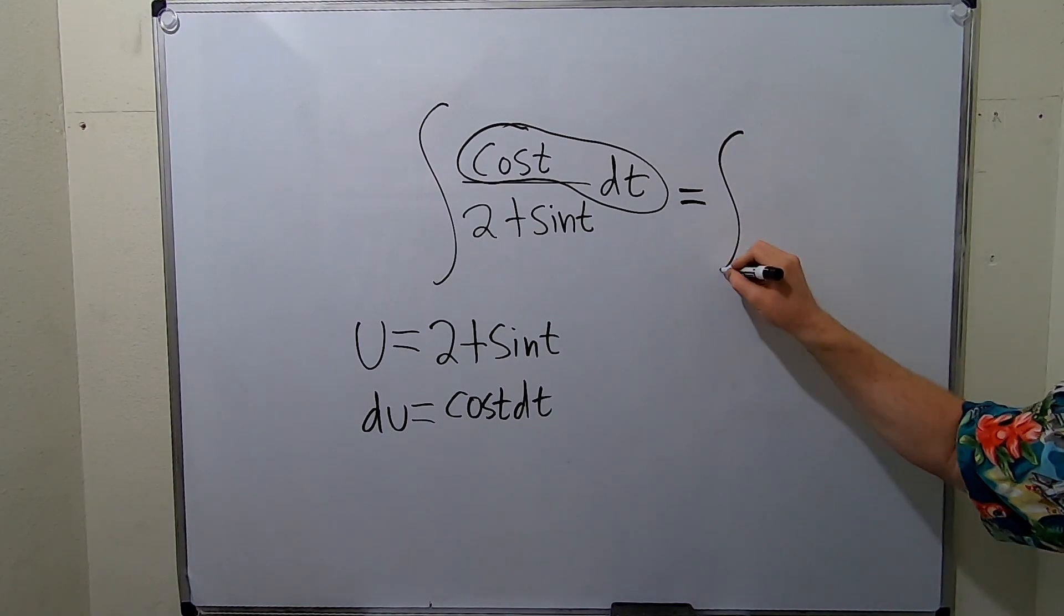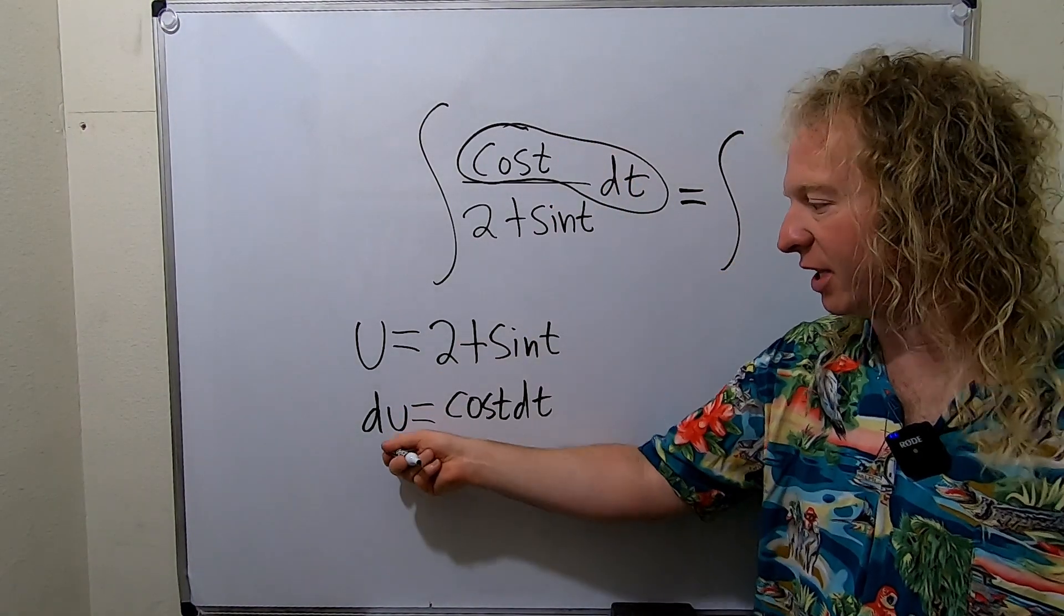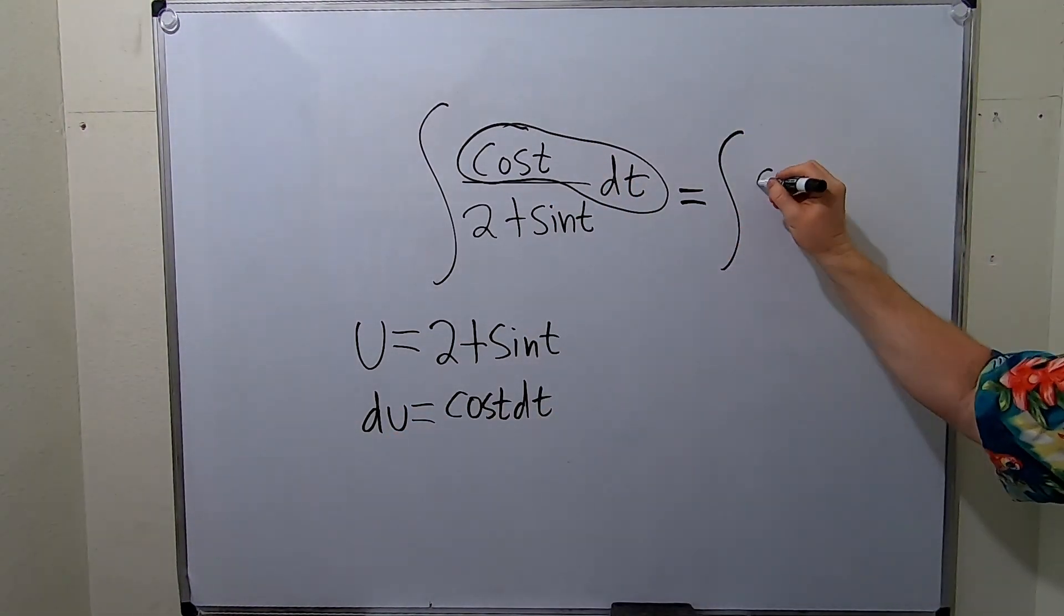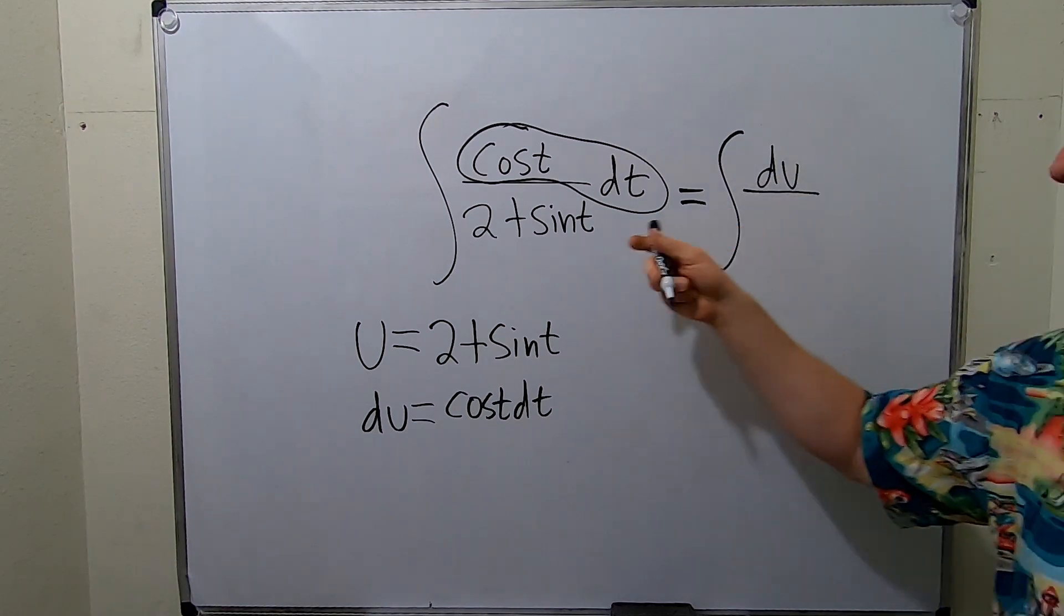So this is equal to the integral. So all of this is just going to become du. So it'll just be du over and the bottom piece is u.